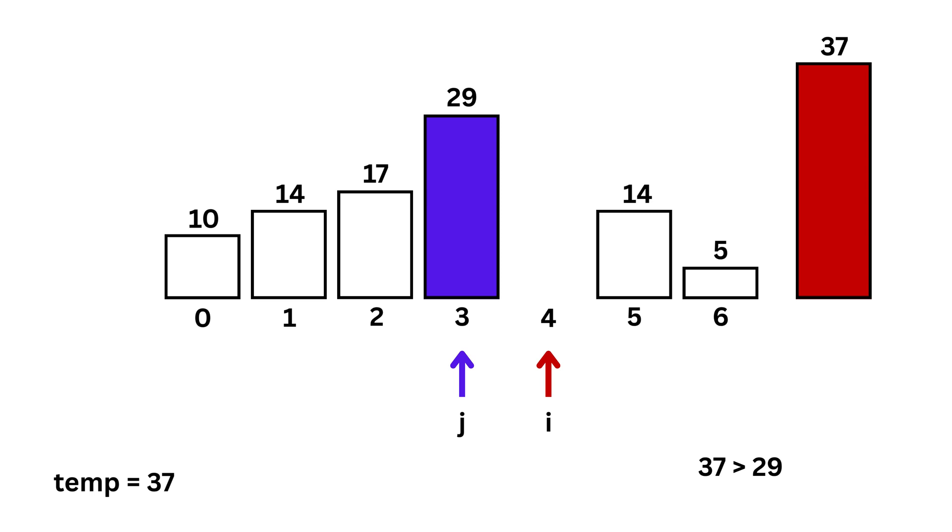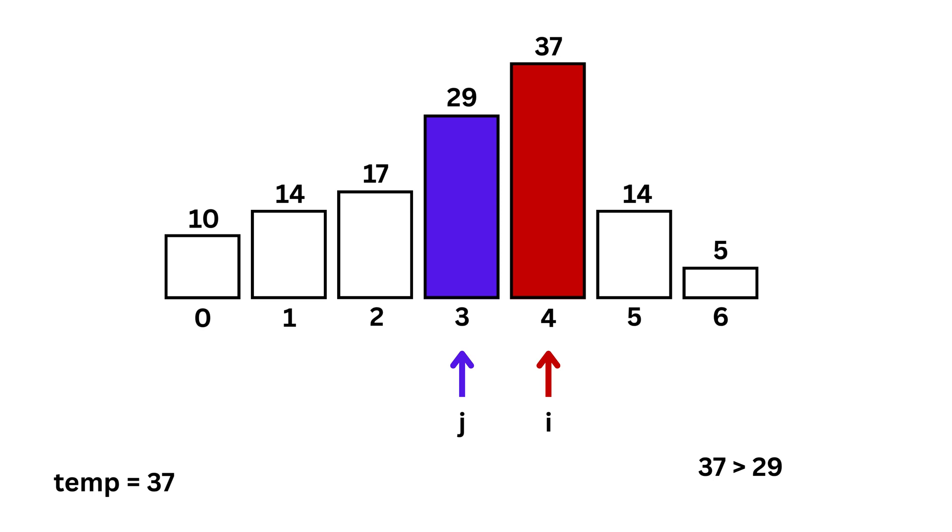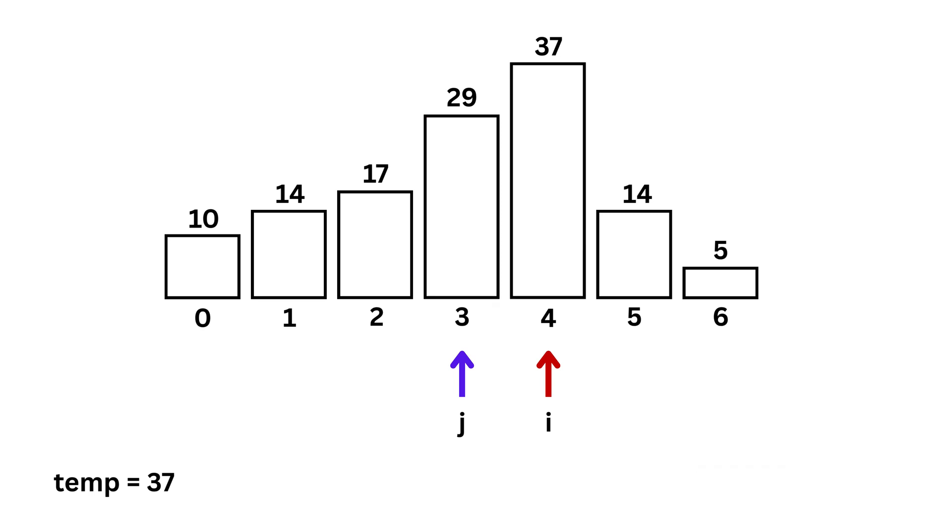So, we don't shift anything. That means temp is already in the correct place. The list stays the same, and we move i by one step to the right.